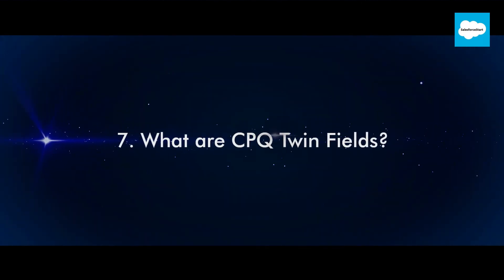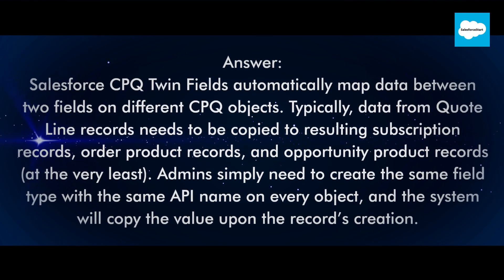Question 7: What are CPQ twin fields? Salesforce CPQ twin fields automatically map data between two fields on different CPQ objects. Typically, data from quote line records needs to be copied to resulting subscription records, order product records, and opportunity product records at the very least. Admins simply need to create the same field type with the same API name on every object, and the system will copy the value upon the record's creation.